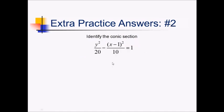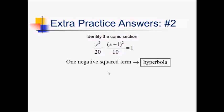For this problem, I notice I've got two squared terms, so that means this can't be a parabola. And I notice that I have some opposite signs for x squared and y squared — A and B have opposite signs. We have one negative squared term, so that means this could only be a hyperbola.